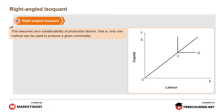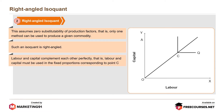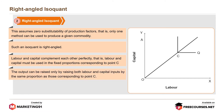Second, right angle isoquant. This assumes zero substitutability of production factors — that is, only one method can be used to produce a given commodity. Such an isoquant is right angled. Labor and capital complement each other perfectly; they must be used in fixed proportion corresponding to point C. The output can be raised only by raising both labor and capital inputs by the same proportion. Also known as input-output isoquant or Leontief curve.